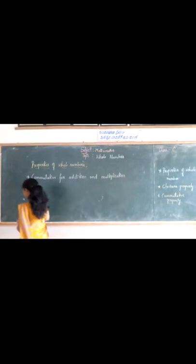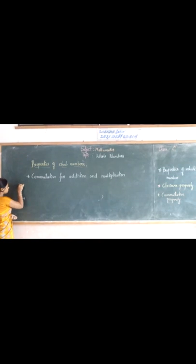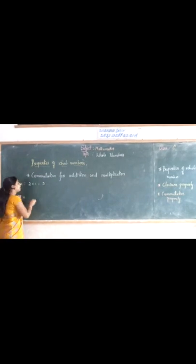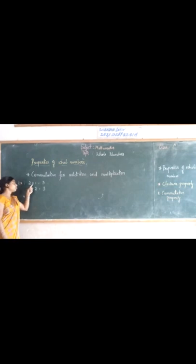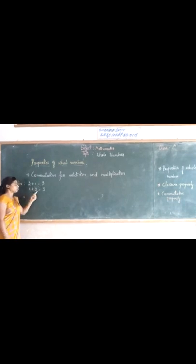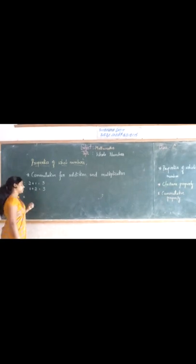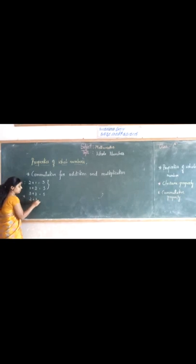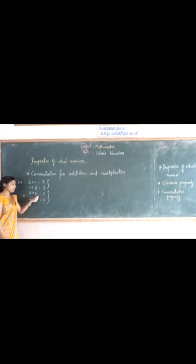Consider an example: 2 plus 1 which is equal to 3, and 1 plus 2 which is also equal to 3. Here the order of the numbers is changed — first we add 2 plus 1 and get 3, and 1 plus 2 also gives the same answer. Another example: 3 plus 2 which is equal to 5, and 2 plus 3 which is equal to 4. Here also the order of the numbers is changed but we get the same answer.